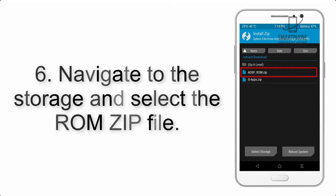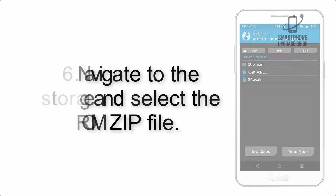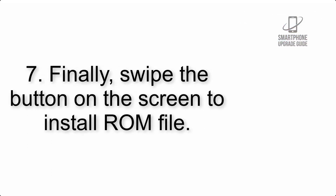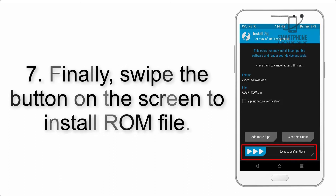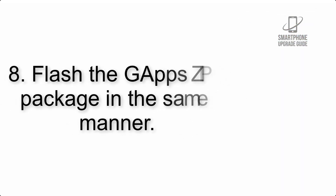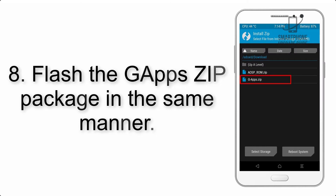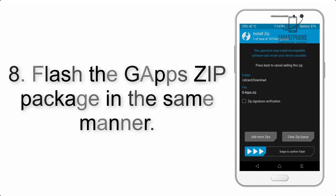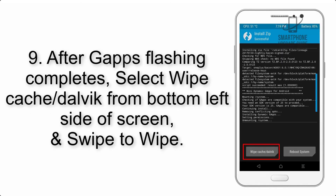Step 5: Go back to the recovery main screen and tap on the Install button. Step 6: Navigate to the storage and select the ROM zip file. Step 7: Finally, swipe the button on the screen to install the ROM file.